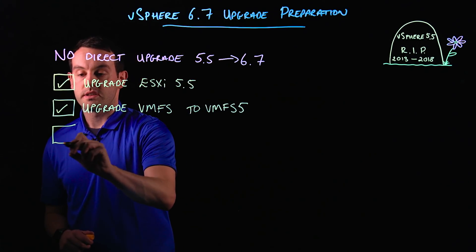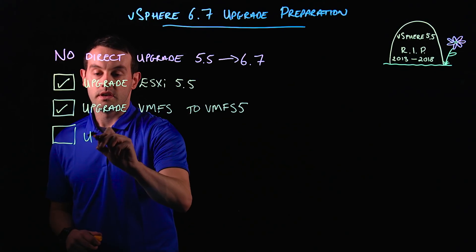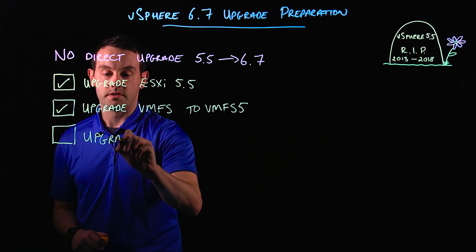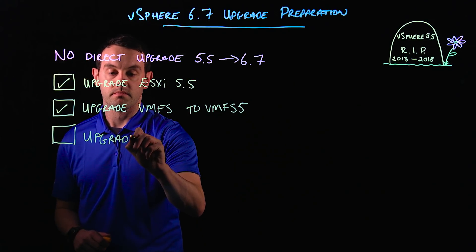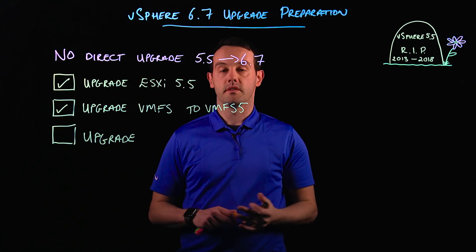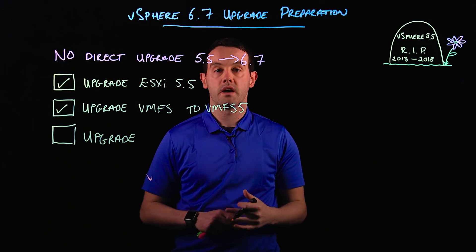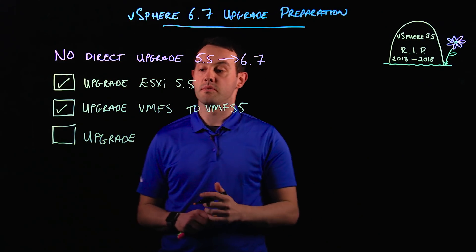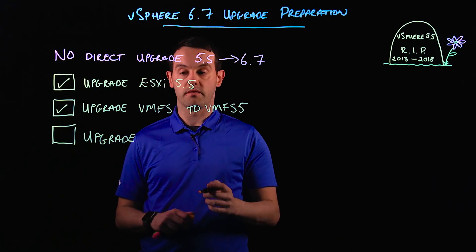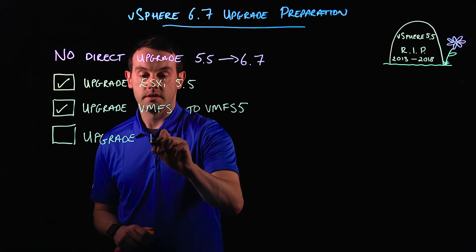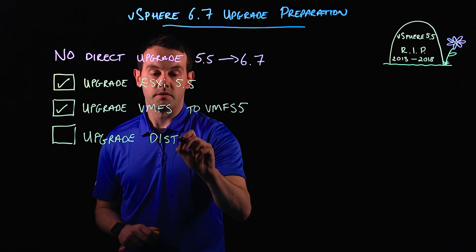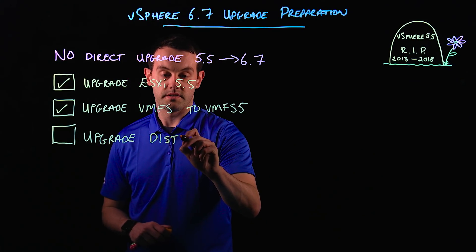The next thing you may want to look at is upgrading your distributed switches. Even though you're running vSphere 6.0 or 6.5, you may have an older distributed switch that's running version 5.5. You need to upgrade the distributed switch to a minimum of 6.0.